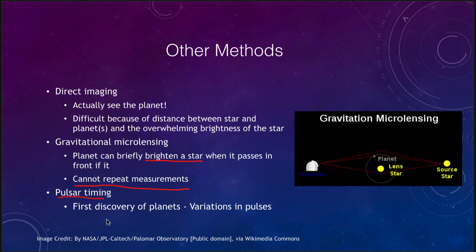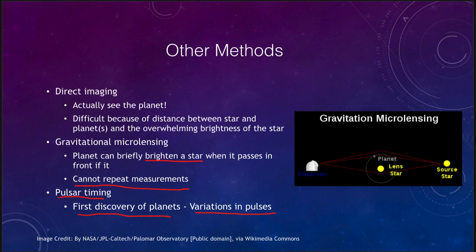Pulsar timing was our very first discovery of planets outside of our solar system, based on the variation of pulses in a pulsar. It was actually quite surprising because we wouldn't have expected a planetary system to exist around a pulsar — a pulsar is the remnant left over when a supernova occurs, and we would think a supernova would be powerful enough to have destroyed all of the material around it. But perhaps some material recondensed and new planets formed afterward, because these were very definitely the first detections of extrasolar planets.